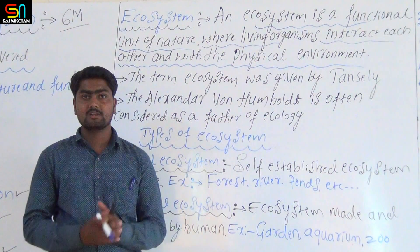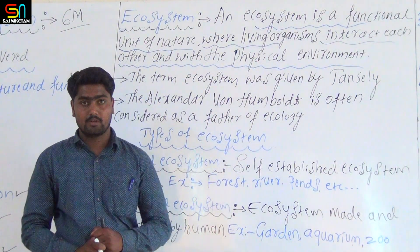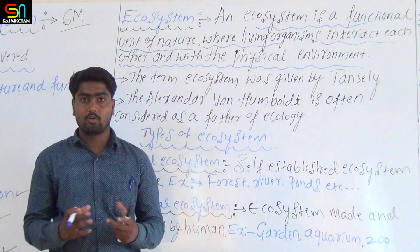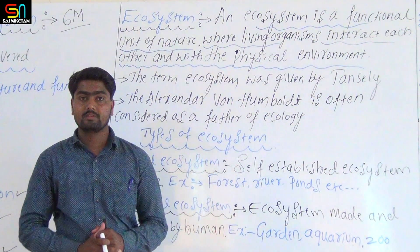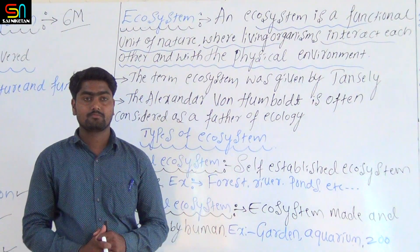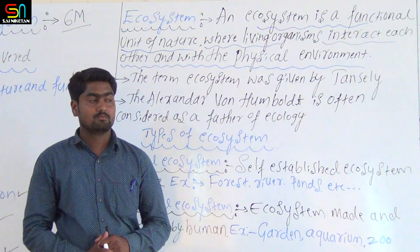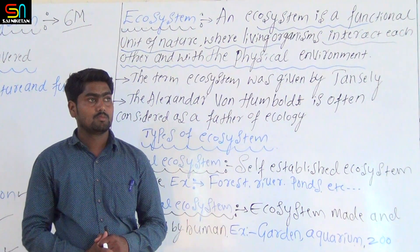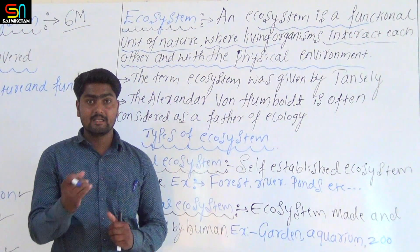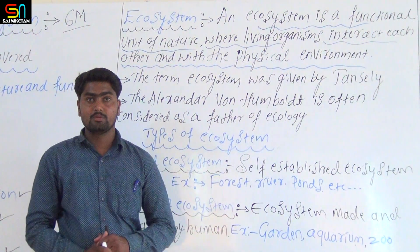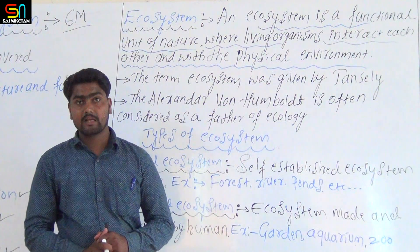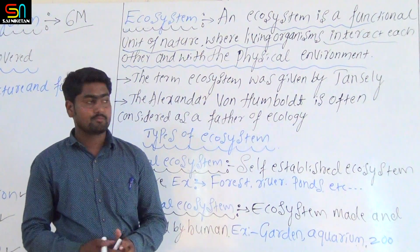Some ecosystem examples: forest ecosystem, river ecosystem, desert ecosystem, and grassland ecosystem.